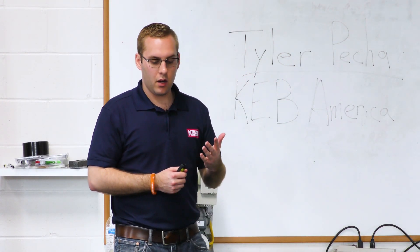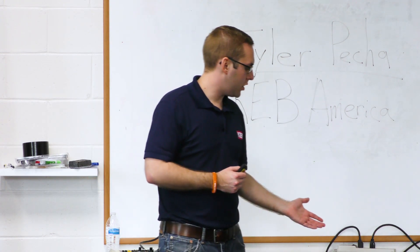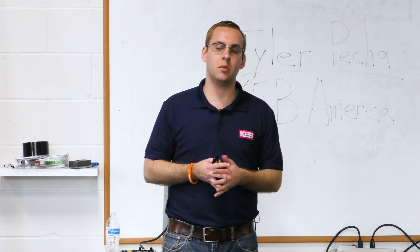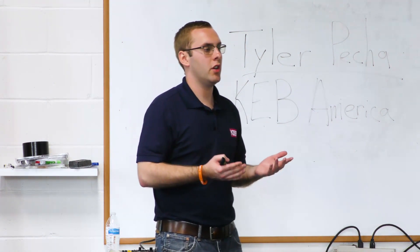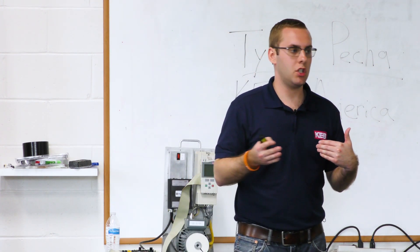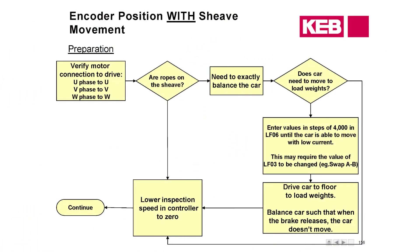Depending on the motor type, some motors — because of how they're designed and the materials used — will feature higher inductance. With higher inductance, the drive has a harder time measuring the encoder position in the background and may give an error saying the counts were varying too much and it could not calculate the position. In that case it might say try another method. That other method is the pole learn, which does the same as the SPI but needs to be done with no ropes on the shiv or a balanced car.